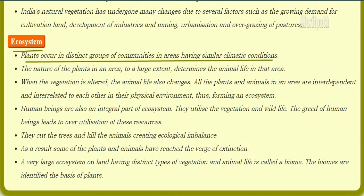Plants occur in distinct groups of communities in areas having similar climatic conditions. The nature of plants in an area, to a larger extent, determines the animal life in that area. When vegetation is altered, animal life also changes. All the plants and animals of a habitat are interdependent and interrelated to each other in their physical environment, and thus they form an ecosystem.